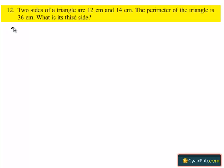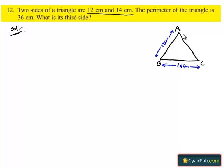Let's do the solution. First, consider a triangle ABC, A, B and C. Given that length of two sides of the triangle are 12 cm and 14 cm, let us assume that length of side AB as 12 cm and length of side BC as 14 cm. We have to find the length of side AC.